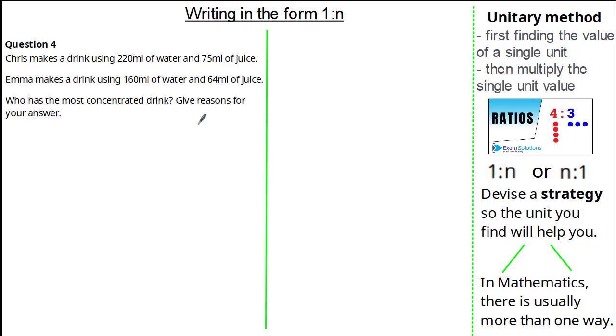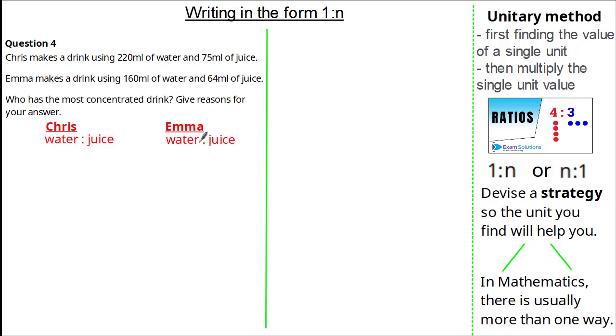This question states that Chris is making a drink using 220 millilitres of water and 75 millilitres of juice. Emma makes a drink using 160 millilitres of water and 64 millilitres of juice. We're asked who has the most concentrated drink and we must give reasons for our answer. Firstly, let's write the ratio of water to juice for both Chris and Emma. From here, I'm going to substitute my values in and simply remove our units.